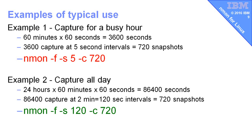The second example would be capturing all day. A lot of people just capture it as a matter of course all day long: 24 hours, 60 minutes, 60 seconds — this is the number of seconds in a day. And then if we say let's capture it at two-minute intervals, again we come up with 720. That will graph nicely. So that's a good mix of enough detail and enough data in the file.